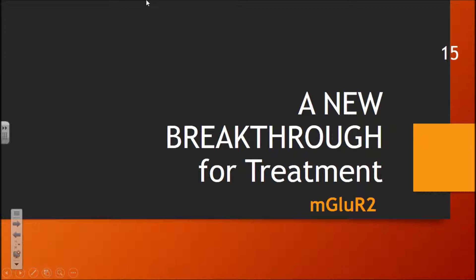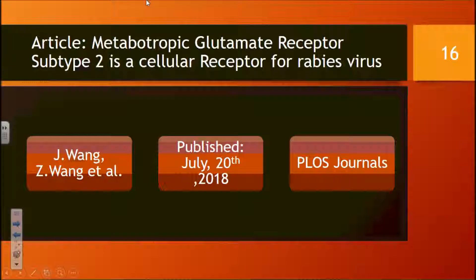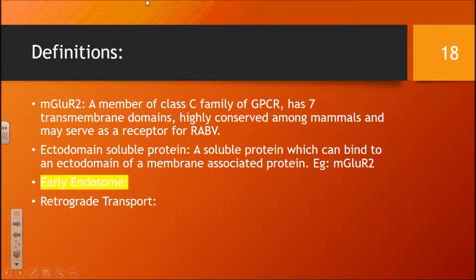Today, the article we'll be discussing focuses on an mGluR2 receptor found on the host. The goal of this article is to determine the relative importance of mGluR2 with the rabies virus.